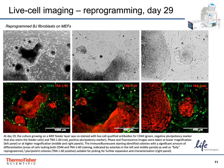This slide shows reprogramming at day 29. Phase and fluorescent images were taken at lower magnification, shown in the left panel, or at higher magnification, shown in the middle and right panels. The immunofluorescent staining identified colonies with a significant amount of differentiation marked by areas lacking both CD44 and TRA160 staining, indicated by asterisks in the left and middle panels. We also saw fully reprogrammed or pluripotent colonies that are TRA160 positive, seen here in the right panel. These colonies are suitable for picking and further expansion and characterization, which is the first step in derivation of a new iPSC cell line.